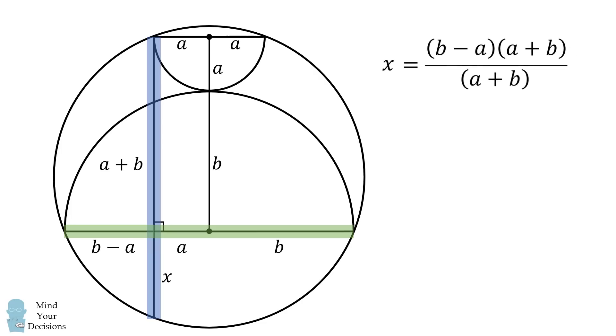We'll solve for x and cancel out the term a plus b in the numerator and the denominator. Thus, x is equal to b minus a.